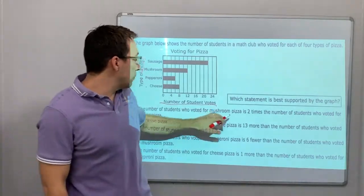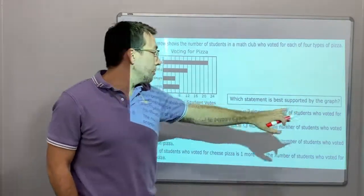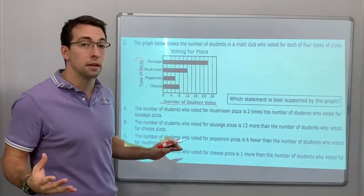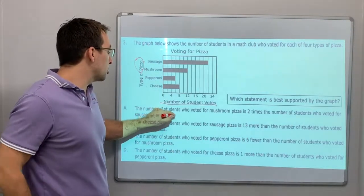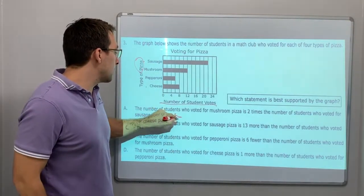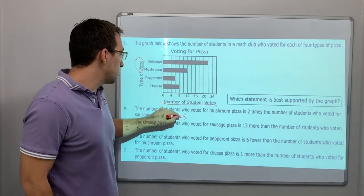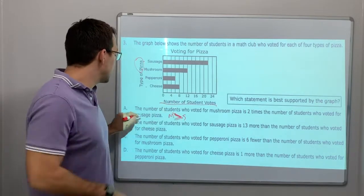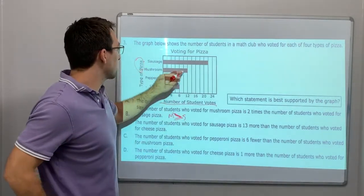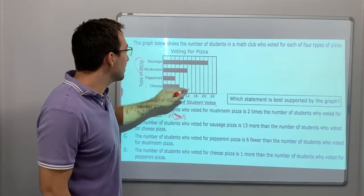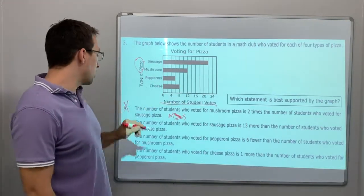Choice A: the number of students who voted for mushroom pizza is two times the number who voted for sausage. So mushroom should be greater than sausage. But looking at the graph, mushroom is actually less than sausage — so that's wrong.